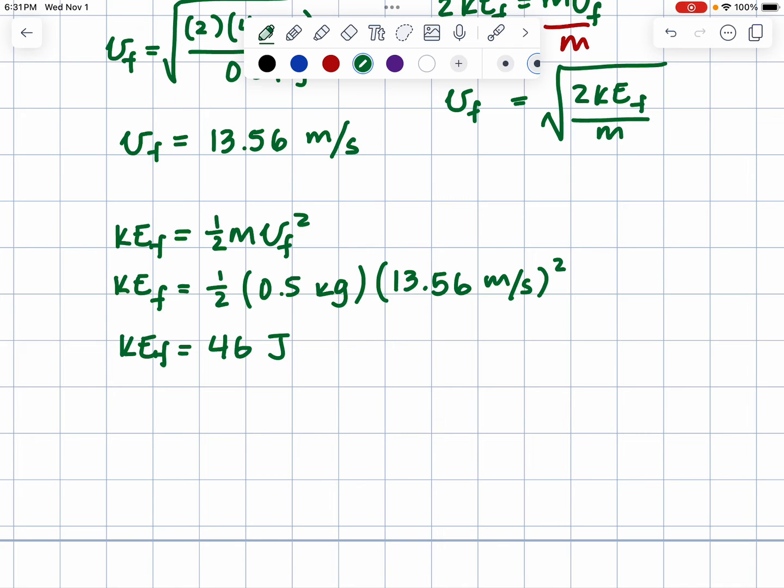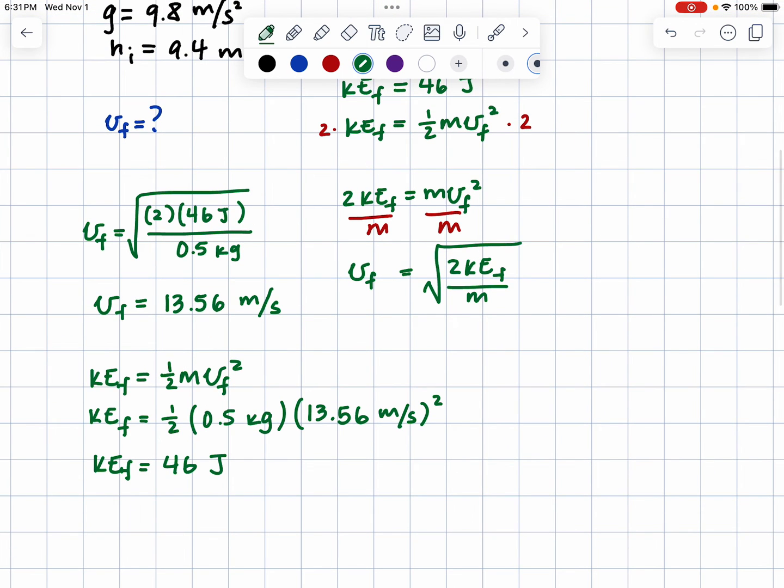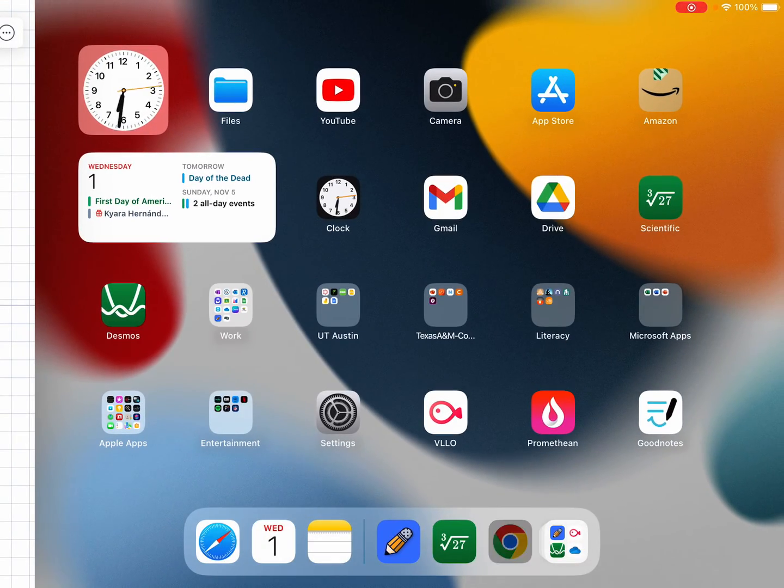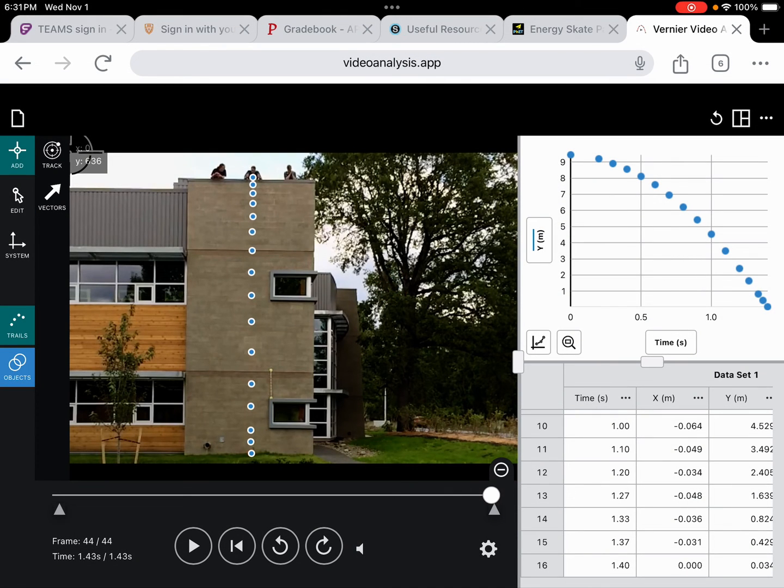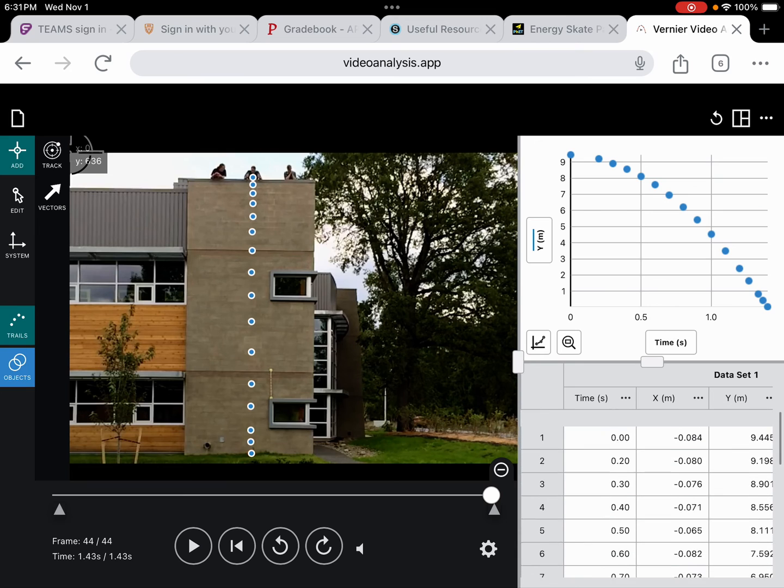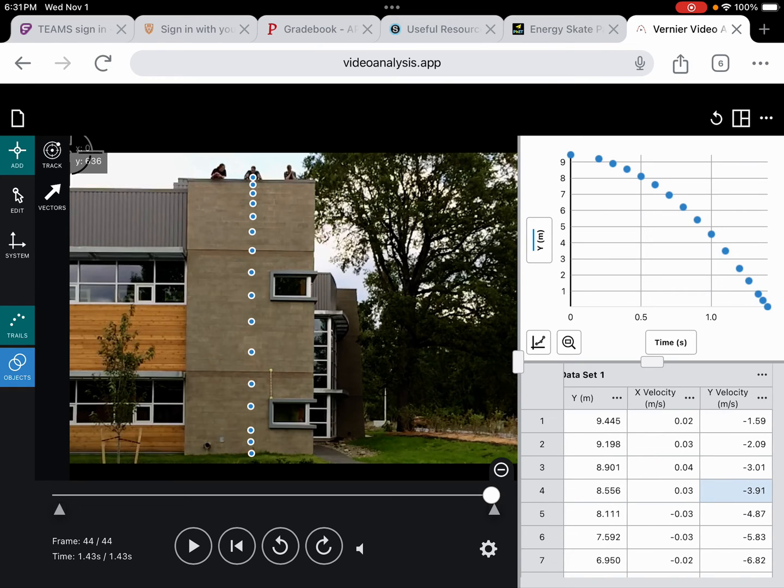Now the question is, how true is this? Because I am ignoring air resistance completely, correct? So to show you, I have this experiment. I use Vernier analysis. I just want you to see the velocity, 13.6. So I track the motion. I have the ball being dropped. The height is 9.45, a little bit more. But now let's see the y velocity. 11.88.